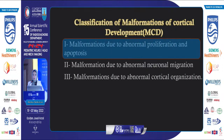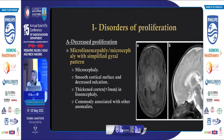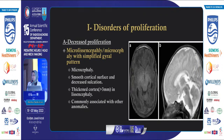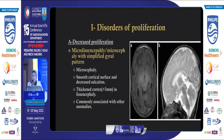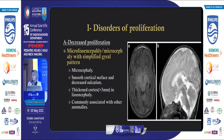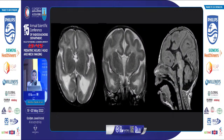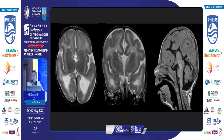Starting with malformations due to abnormal proliferation: microlissencephaly or microcephaly with simplified gyral pattern. Clinically there is microcephaly with a smooth cortical surface and decreased sulcation. A thickened cortex is seen in lissencephaly, while the milder form with simplified gyral pattern shows a thin cortex and is commonly associated with other anomalies. Axial T1 shows decreased sulcation, sagittal T2 shows microcephaly, and axial T2 shows diffusely thickened cortex, decreased sulcation, and smooth brain, consistent with microlissencephaly.